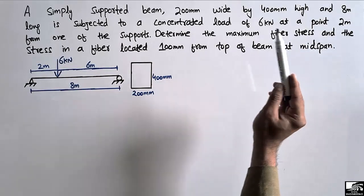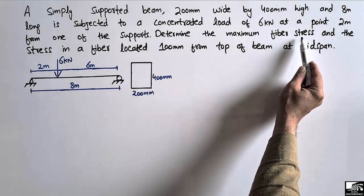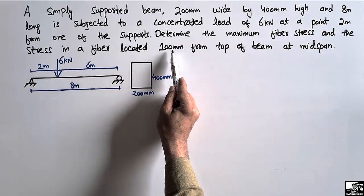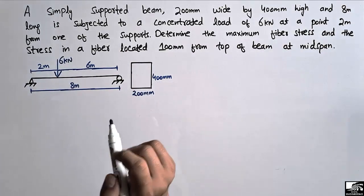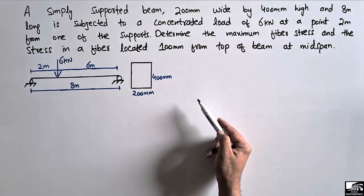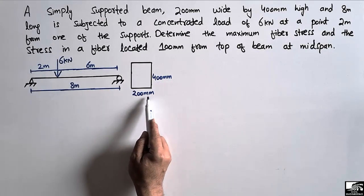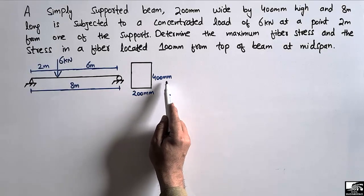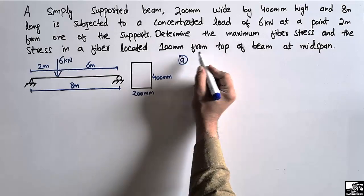There are two parts: first we find the maximum fiber stress, then we find the stress in a fiber at 100 mm from the top of the beam at mid span. This is the cross section of the beam where the width is 200 mm and the height of the beam is 400 mm.